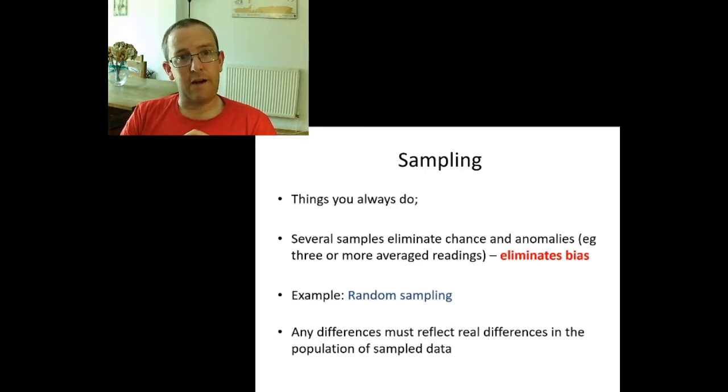And the idea, the key here, if you've done this well, is that any differences you spot between environments reflect real differences in the populations sampled, reflect real variation in the populations that are sampled and not just something weird that you did with your sampling methods.